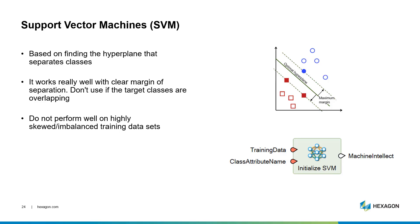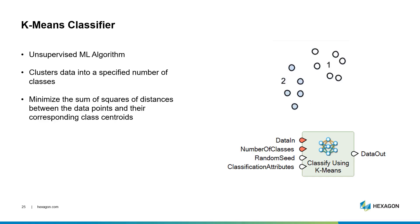Support Vector Machines, or SVM, is based on finding a hyperplane that separates classes. It works really well when there is a clear definition and separation of your classes, but don't use this technique if the target classes are overlapping — for example, in vegetation where classes may be very similar. It also doesn't perform well on imbalanced or skewed training data sets. All the previous classifiers were supervised machine learning, meaning they need training samples to learn from. K-Means is different — it is an unsupervised algorithm that uses clusters of data to separate classes into a set number that we specify, by minimizing the sum of squares of distances between data points and their corresponding class centroids.